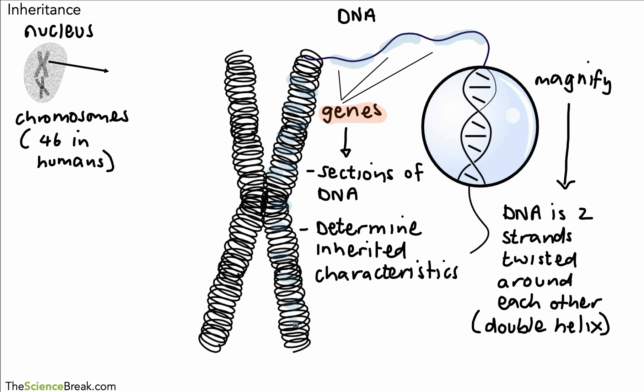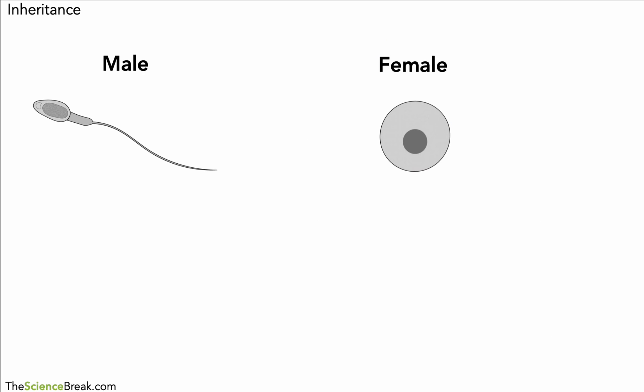All those genes are found along the chromosome on the DNA. It's worth pausing here and making sure you understand the different aspects of this diagram, because it's quite important. We're now going to look at how inheritance works with new individuals.